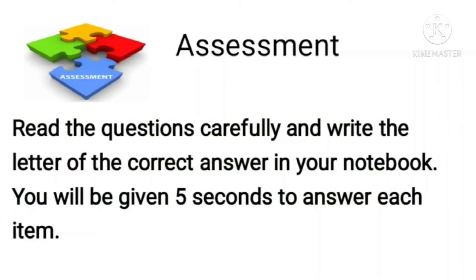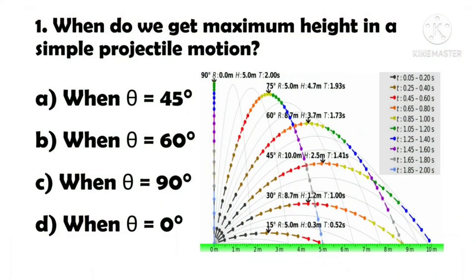Now, let us assess what you have learned from today's lesson. Are you ready? Read the questions carefully and write the letter of the correct answer in your notebook. You will be given 5 seconds to answer each item. Let's begin. Number 1: When do we get maximum height in a simple projectile motion? A. When angle is 45 degrees. B. When angle is 60 degrees. C. When angle is 90 degrees. D. When angle is 0 degrees. The answer is C.